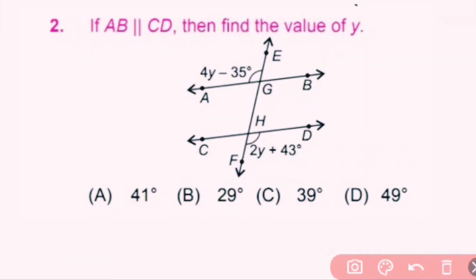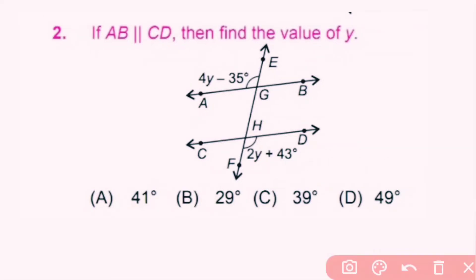Question number 2: If AB is parallel to CD, find the value of y. Here AB is parallel to CD and they intersect at points G and H. Angle AGE equals angle BGH because they are opposite angles, and angle BGH equals angle DHF because they are corresponding angles. So HGB equals 4y minus 35, which equals 2y plus 43.